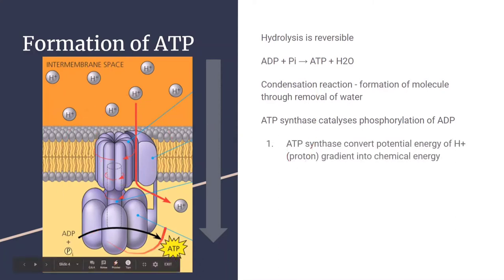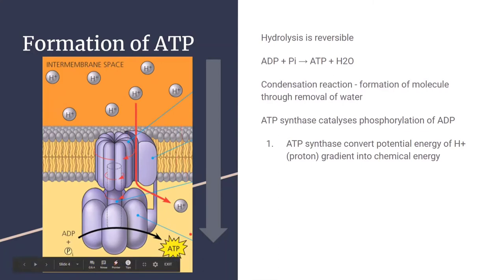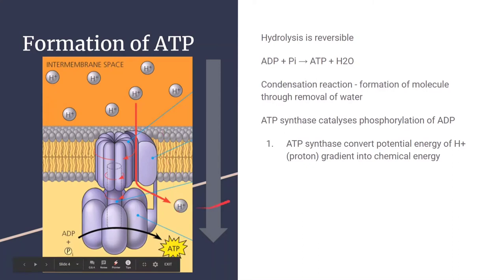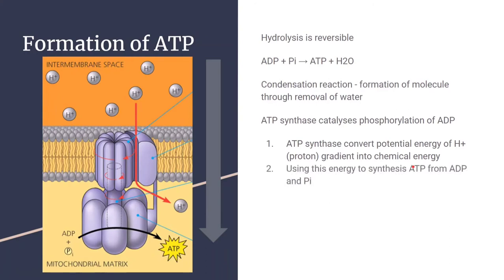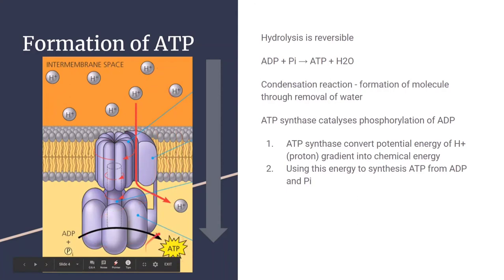ATP synthase converts the potential energy of an H+ gradient into chemical energy. As shown in the diagram, there are more H+ ions (protons) on one side of the membrane than the other, creating a concentration gradient that has potential energy. ATP synthase uses the chemical energy converted from this gradient to synthesize ATP from ADP and phosphate. You can see ADP and phosphate coming to ATP synthase, which uses the energy of the gradient to create ATP.